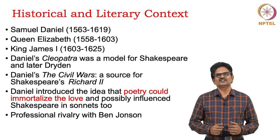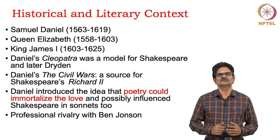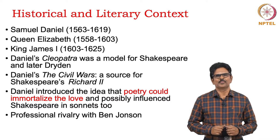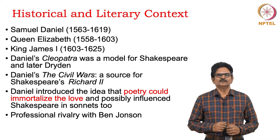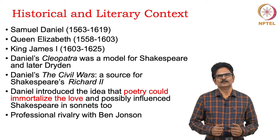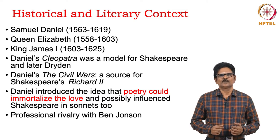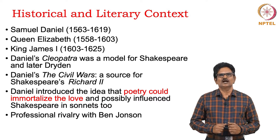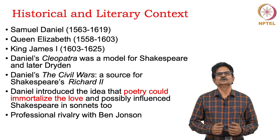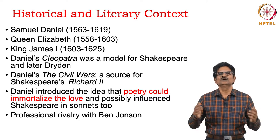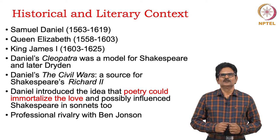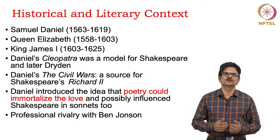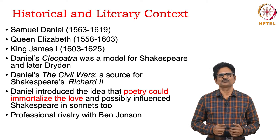What are the historical and literary contexts that shaped Samuel Daniel, the poet who was born in 1563 and who died in 1619? In this period, we see that two monarchs ruled England. Queen Elizabeth ruled England from 1558 to 1603, and King James the First was the monarch from 1603 to 1625. In this period, Daniel wrote many poems, plays, historical books, and sonnets.